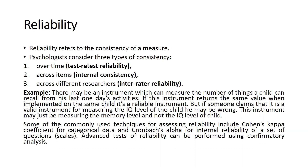But if someone claims that it is a valid instrument for measuring the IQ level of the child, they may be wrong. This instrument may just be measuring memory level and not the IQ level. Validity means we are talking about a valid question related to your problem statement. But reliability means consistency — whether you are asking questions related to your problem statement or not, if you are getting the same answer again and again, that means your Cronbach alpha could be more than 0.7 or 0.8, reflecting consistency.